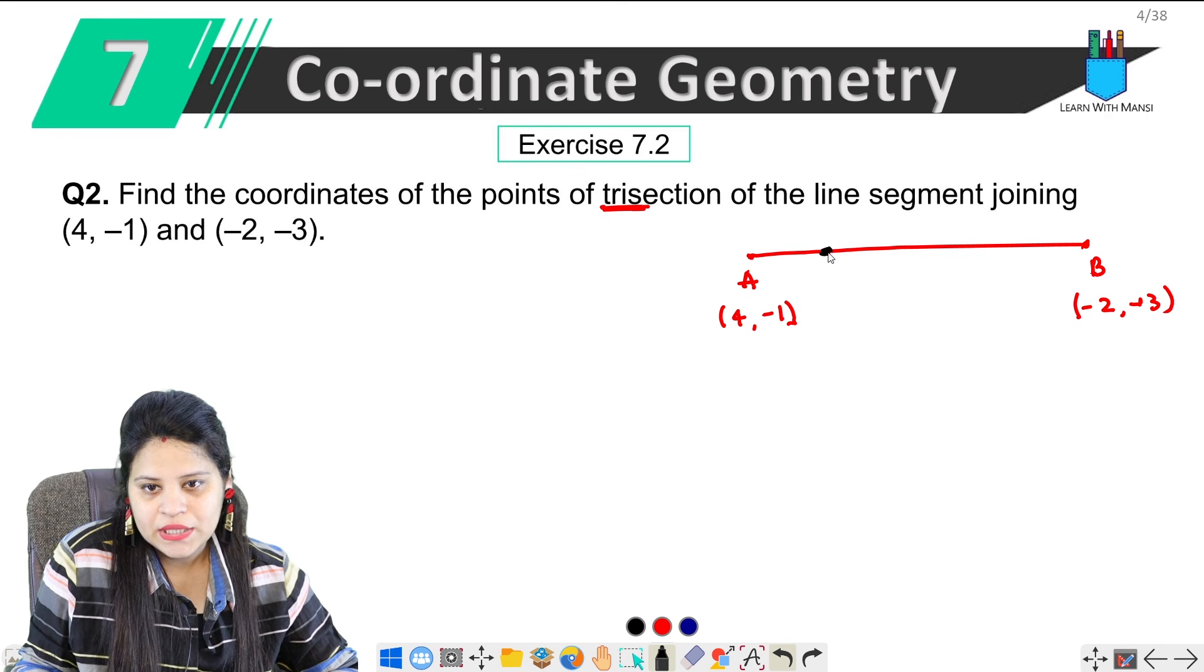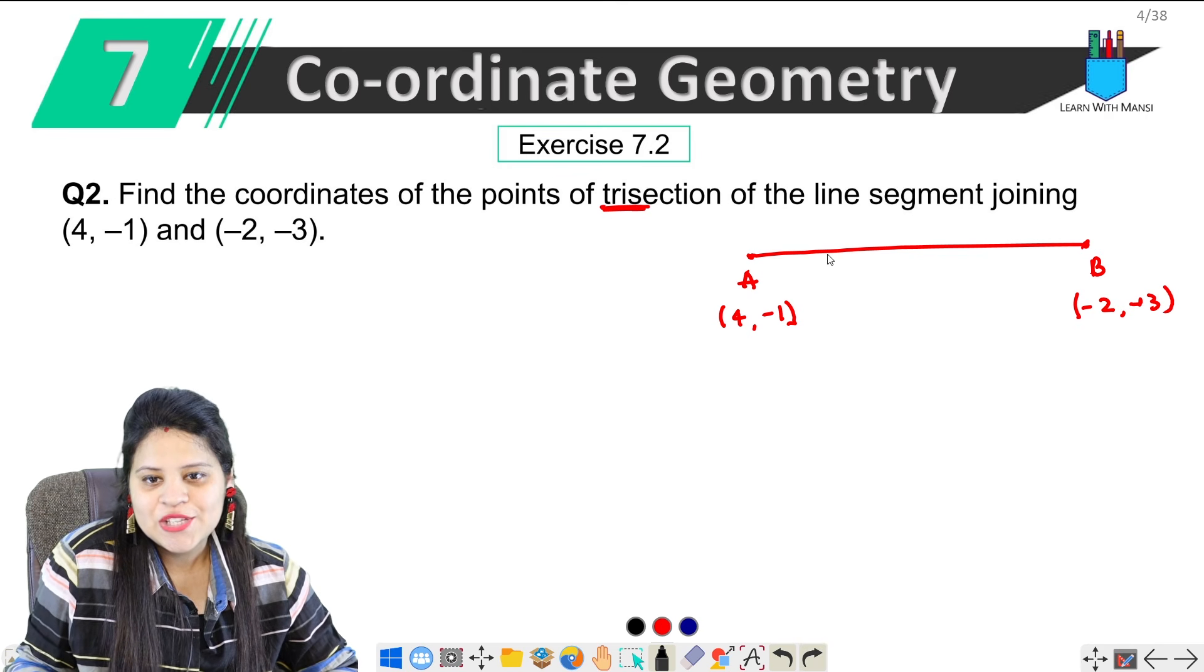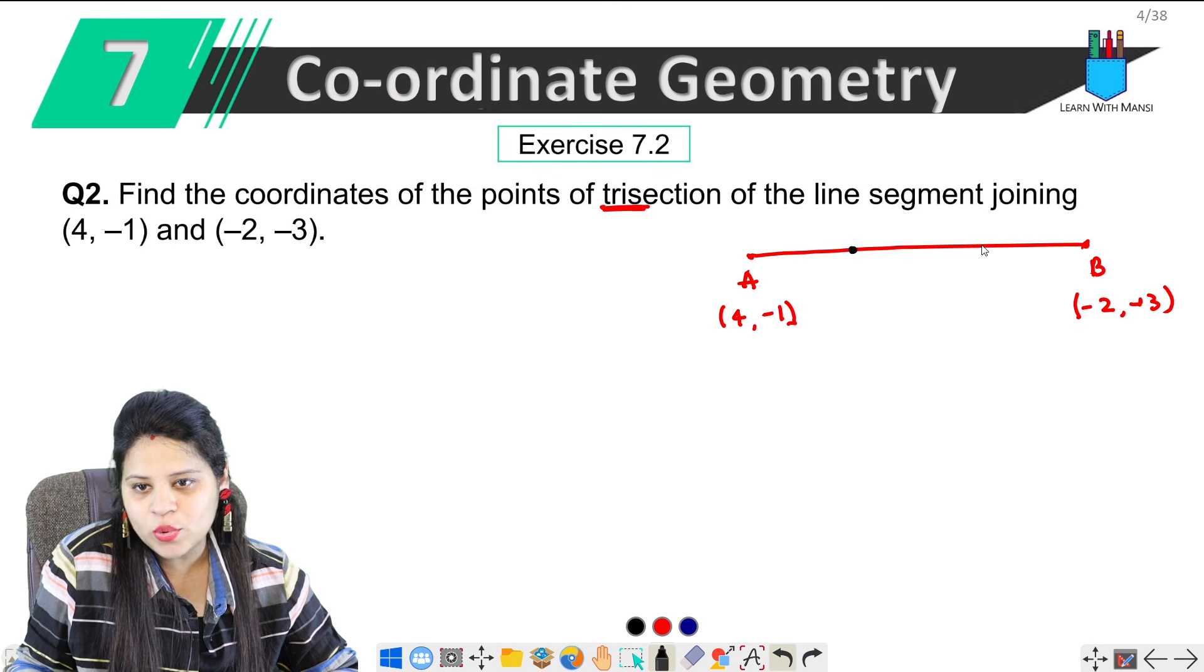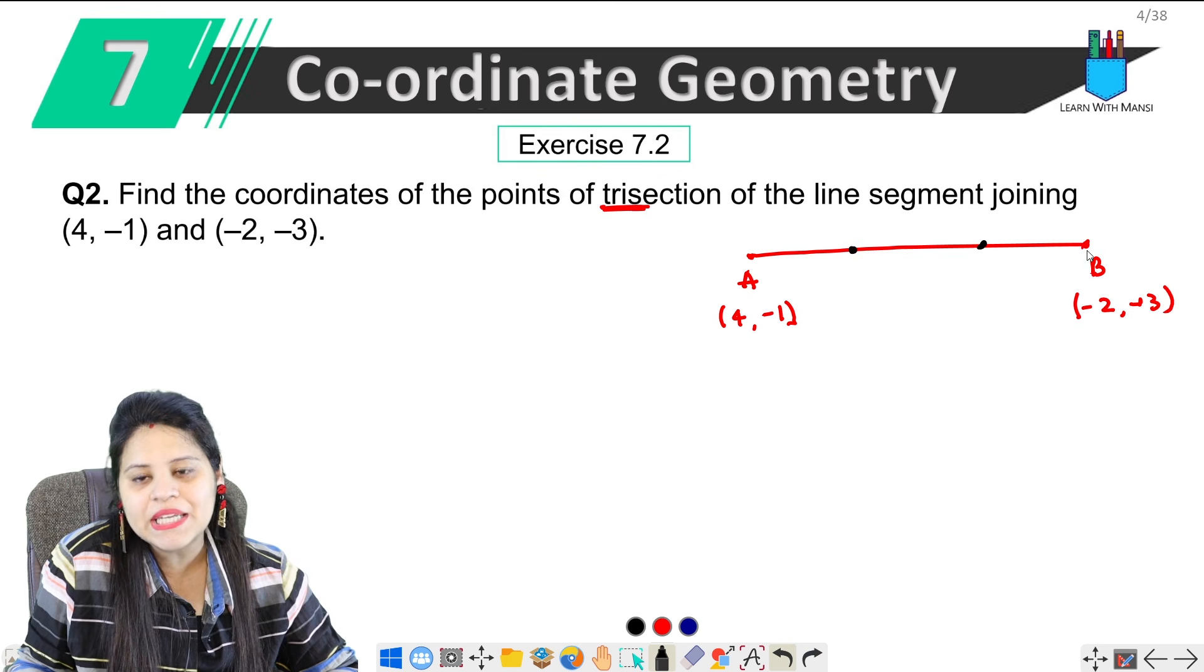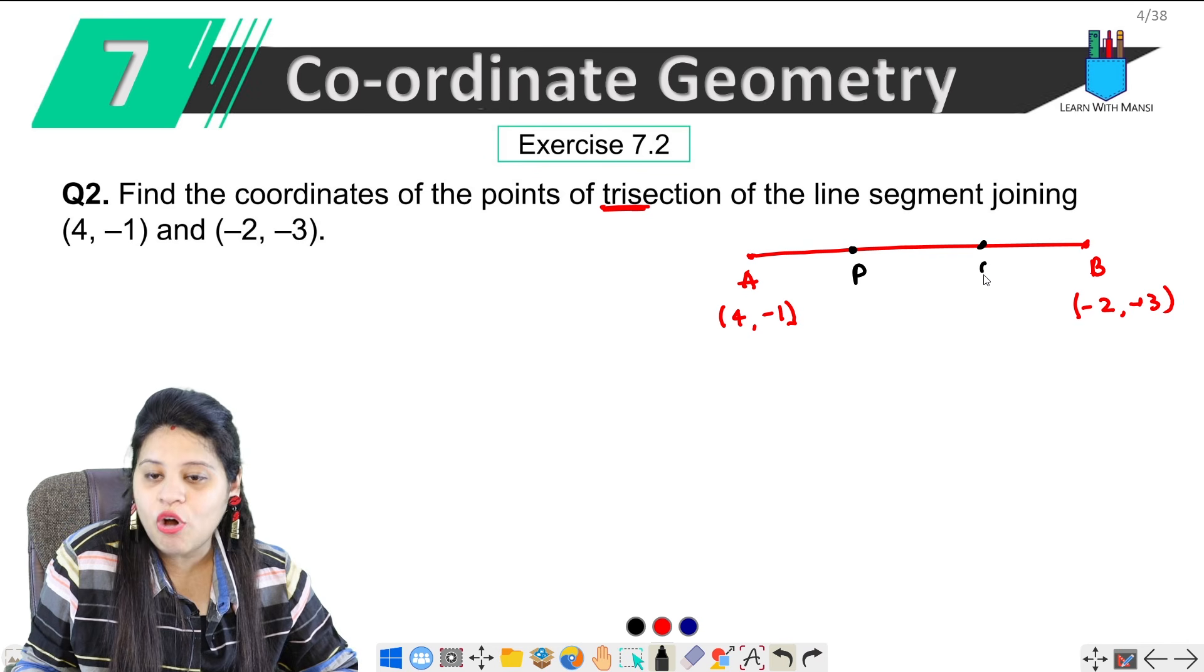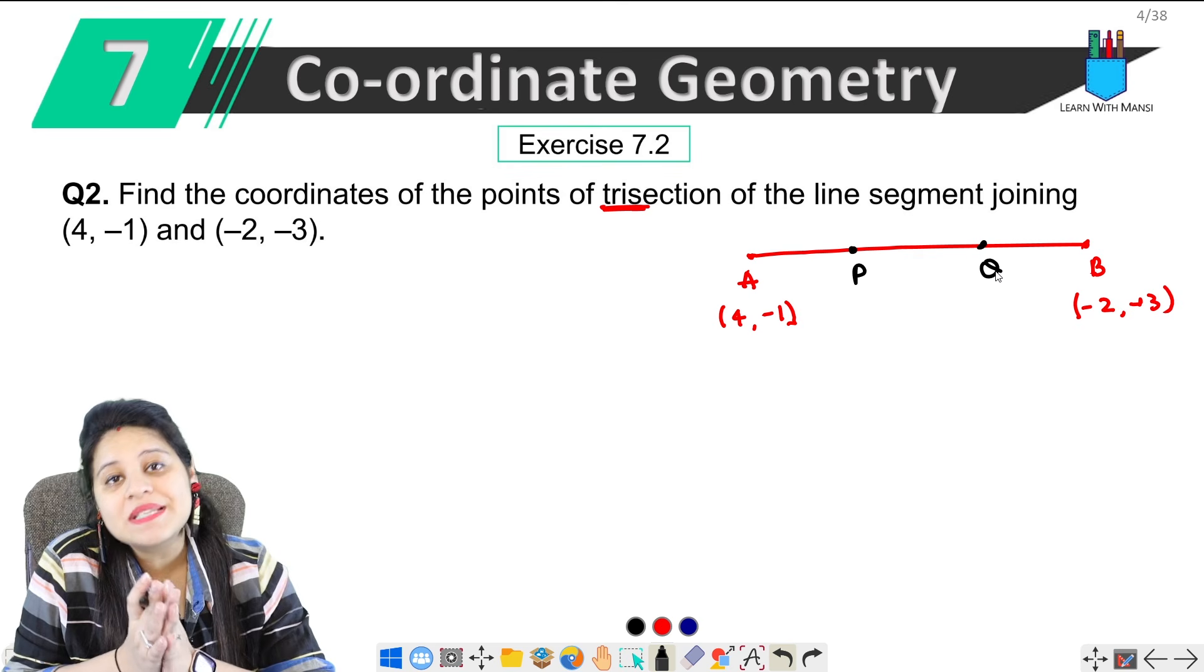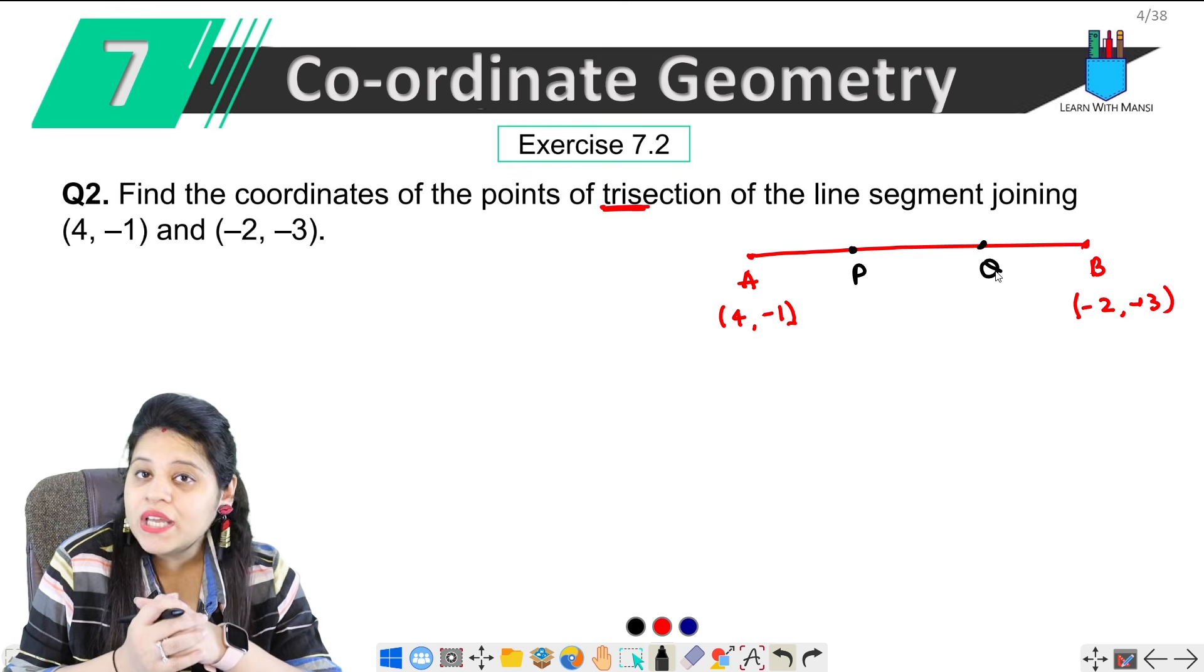Ye hamare paas 2 coordinates hain. Ab bola hai trisection, matlab 3 equal parts mein divide karo. So let's suppose one part ho gaya, so equal mein karna hai. Ye one part ho gaya, ye maanlo second part ho gaya. To ye 3 equal parts mein divide ho gaya. Ab hame kya nikalna hai? P aur Q ke coordinates.